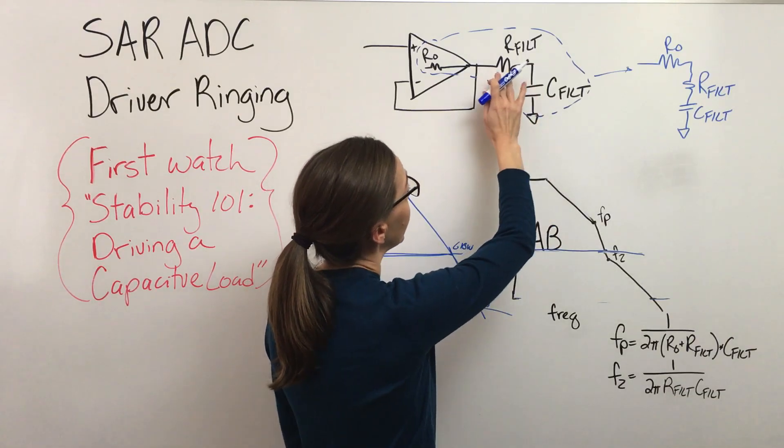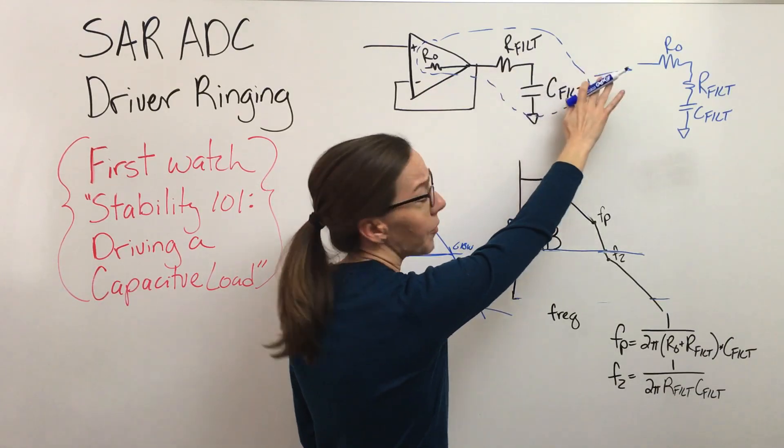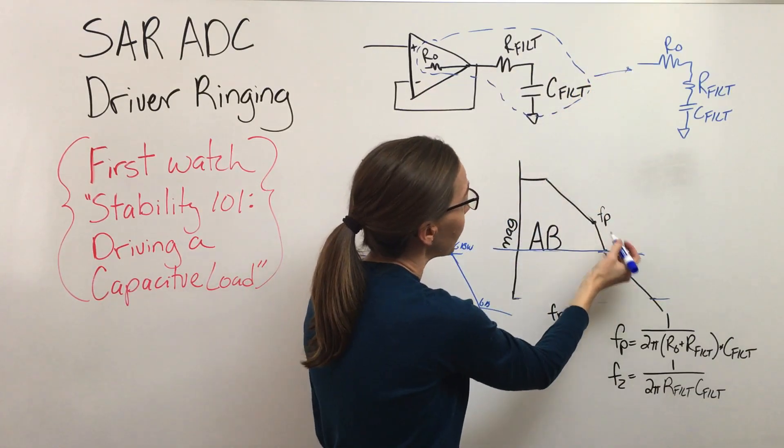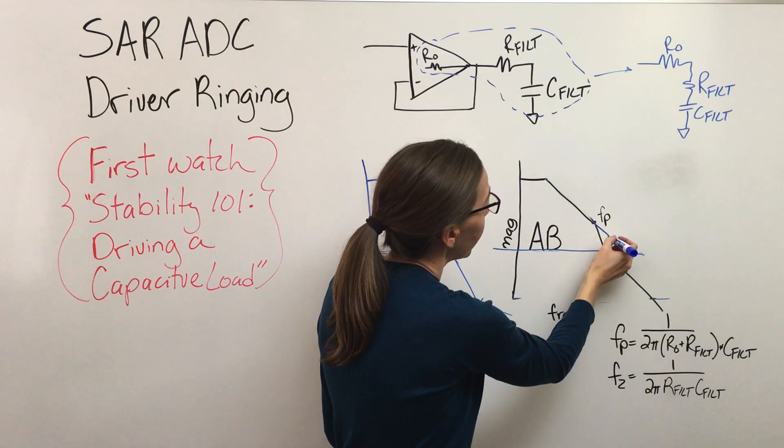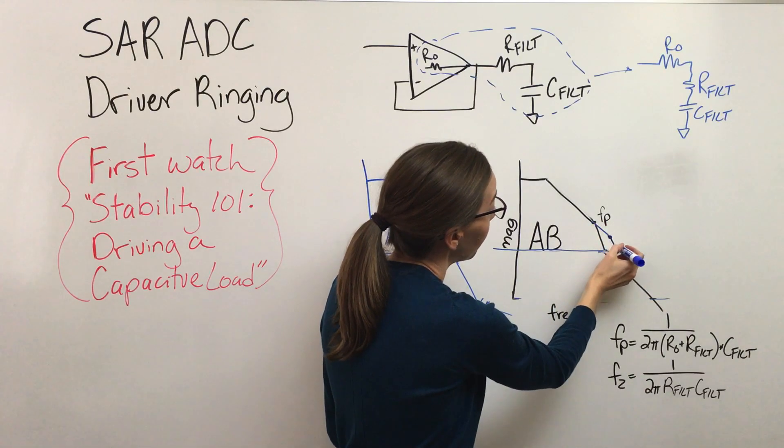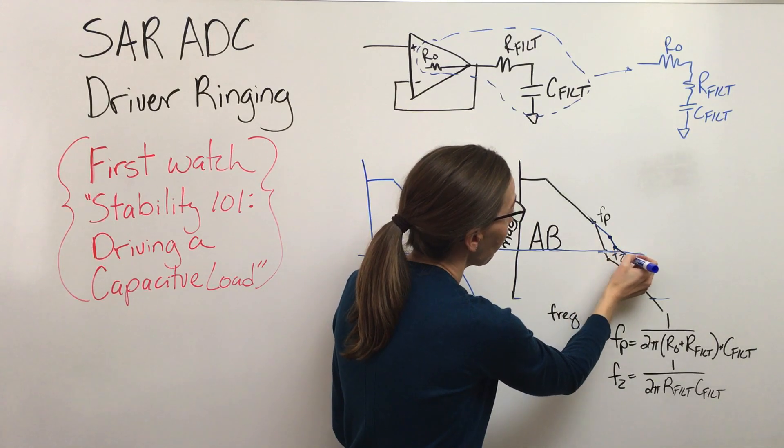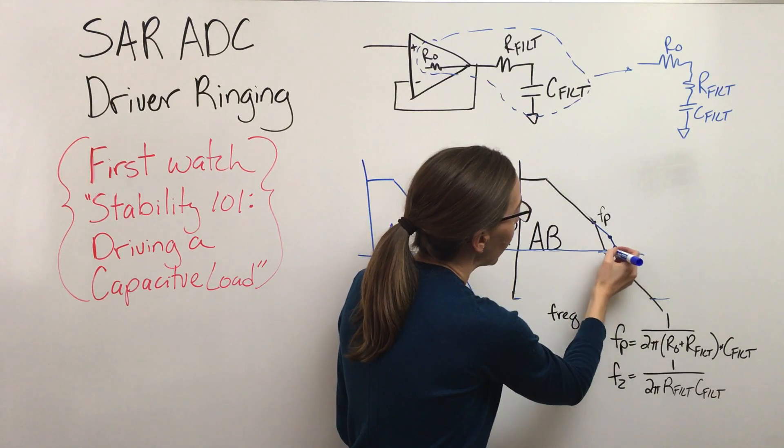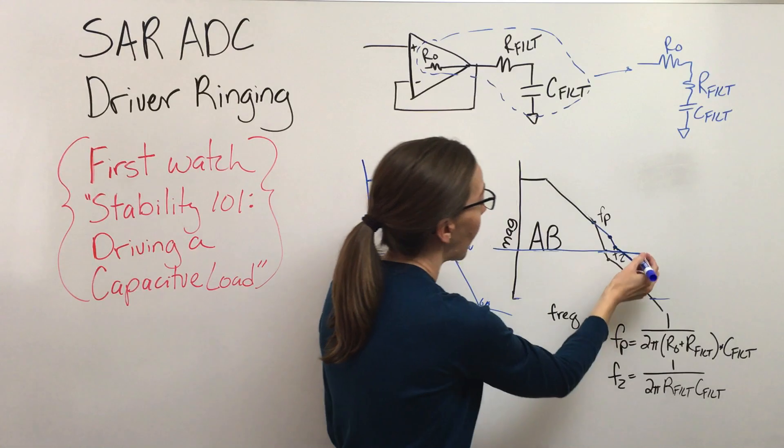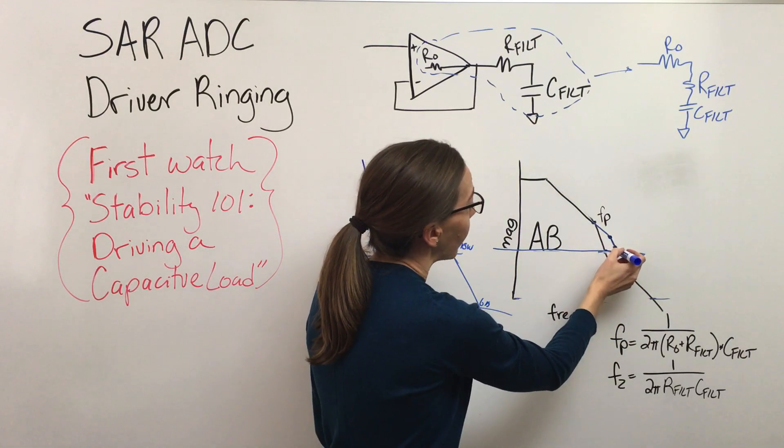Essentially what we're doing is isolating the driver from the ADC. But in the terms of this plot, you will have your pole and your zero much closer together, and in that case you might be able to get away with having that phase returning back up to 90 degrees before you've hit the zero dB crossing.